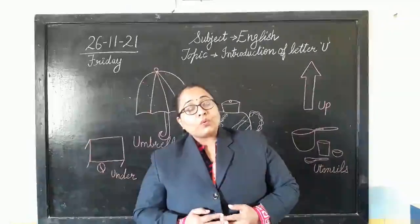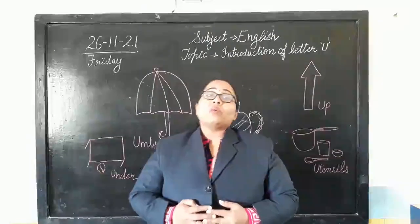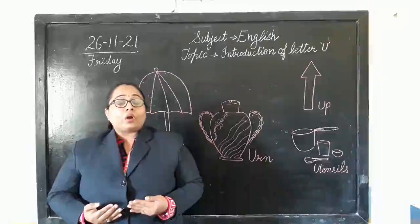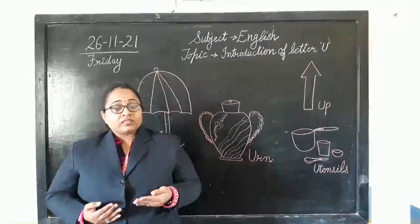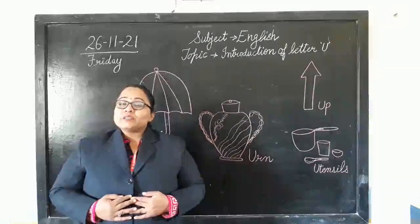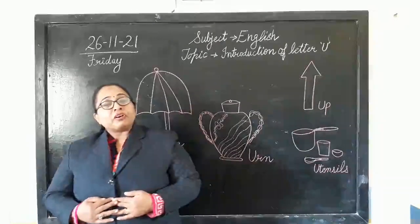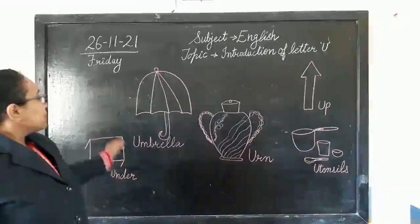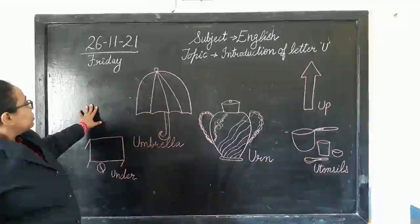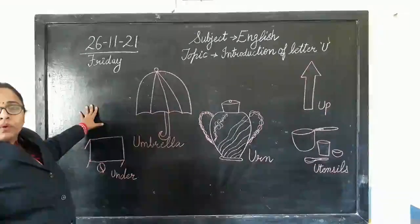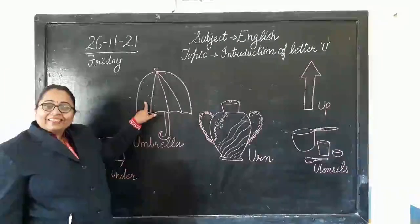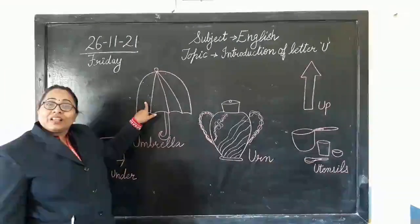I hope you are all thorough with the sound of B. Today I am going to teach you about one more new alphabet and its sound. We will start by identifying some pictures on the board. Can you tell me what these pictures are? It's an umbrella.